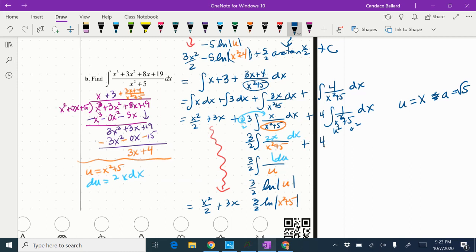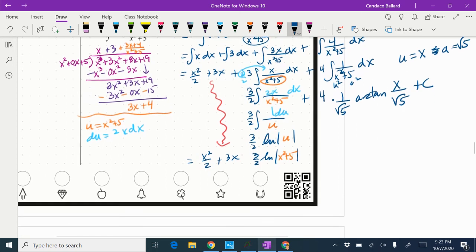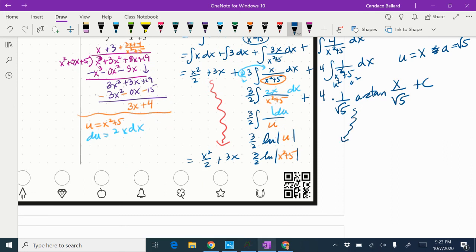So when I do integrate this, remember arctangent, I get a 1 over a out front. So 1 over square root of 5, arctangent of u, which is x over a, which is square root of 5 plus c. And, of course, I'm just going to bring this down to the bottom. So I would have 4 over square root of 5, arctangent of x over square root of 5 plus c.